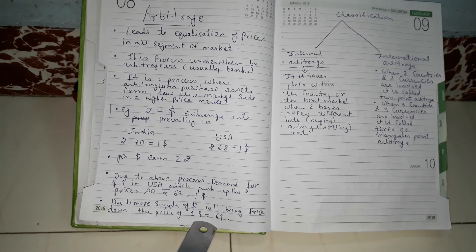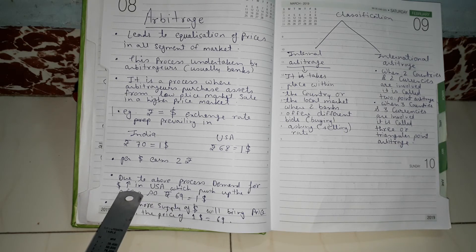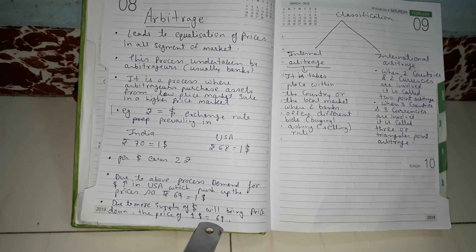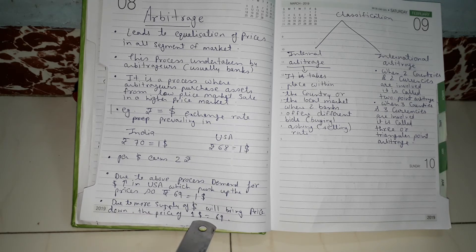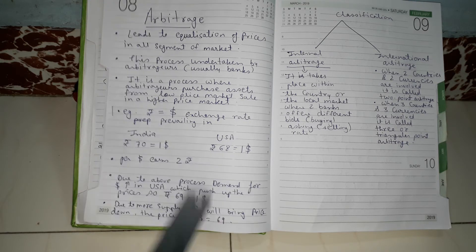Previously, the price of one dollar was 70 rupees in India; now it falls to 69 rupees in India. The reason is that the increase in supply of dollars in India causes the price to decrease, while the increase in demand for dollars in the USA causes the price to increase. In this way, prices equalize across both markets.